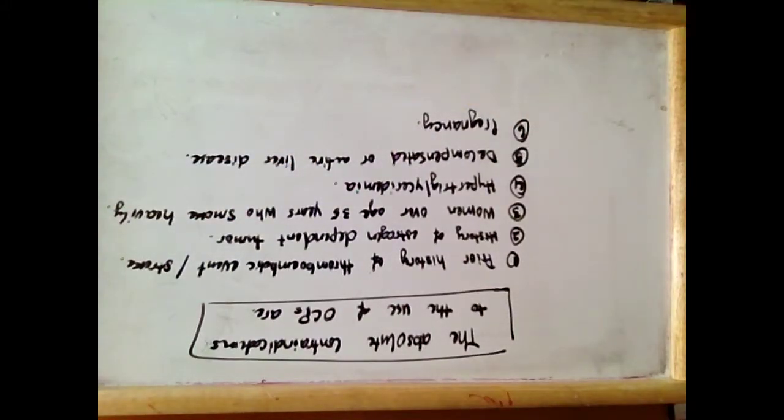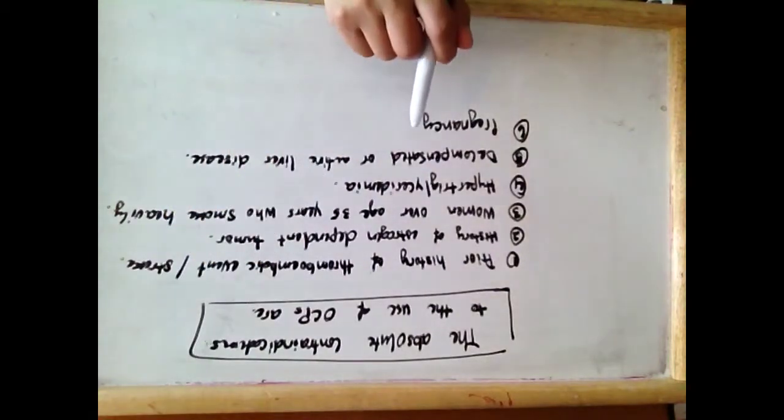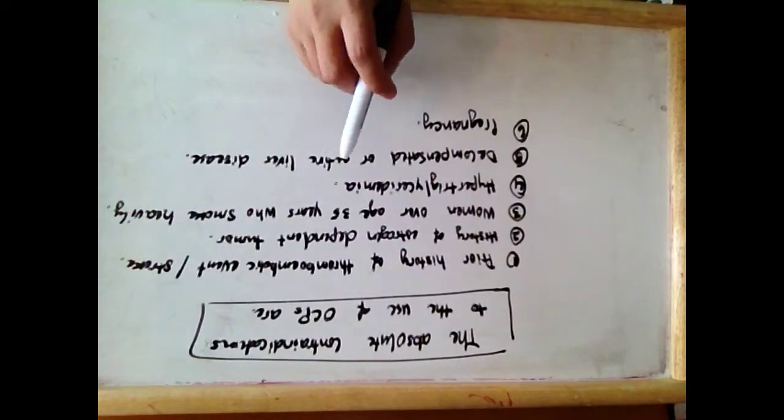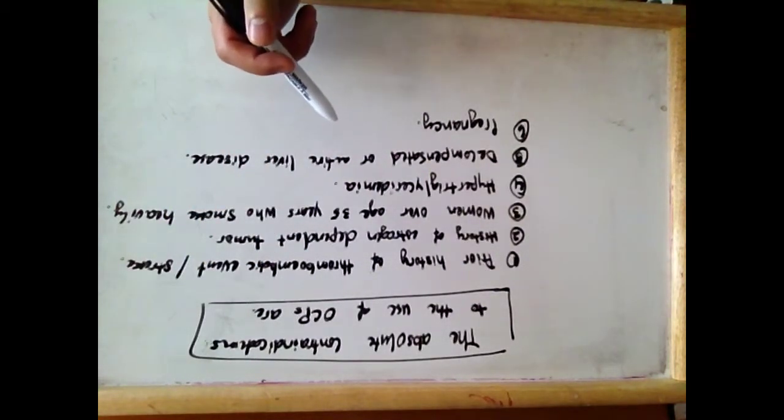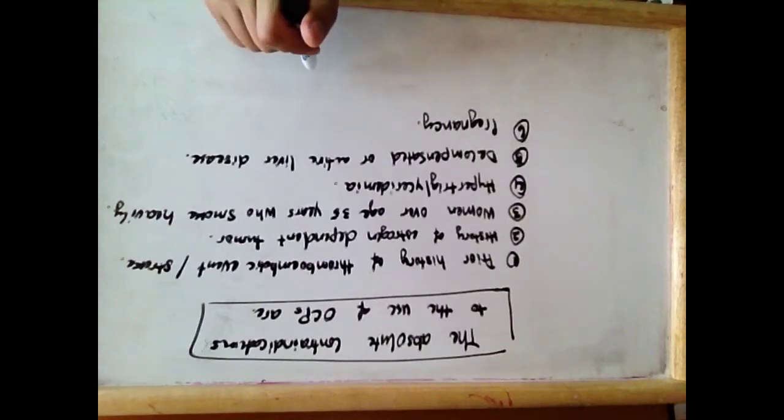The absolute contraindications to the use of oral contraceptive pills. Oral contraceptive pills are the most reliable, reversible form of female contraception.